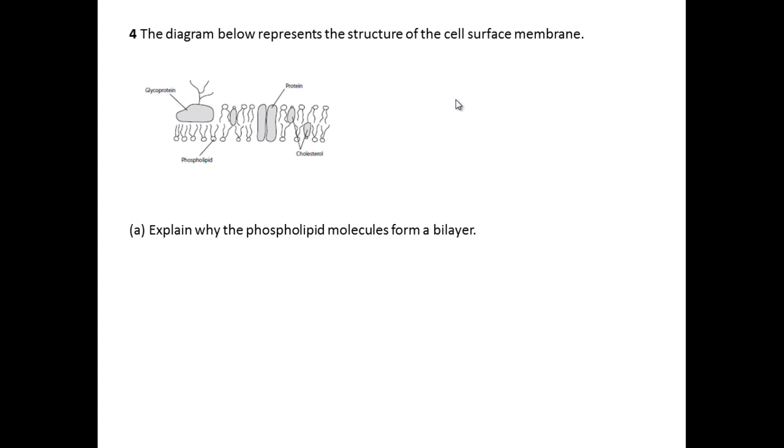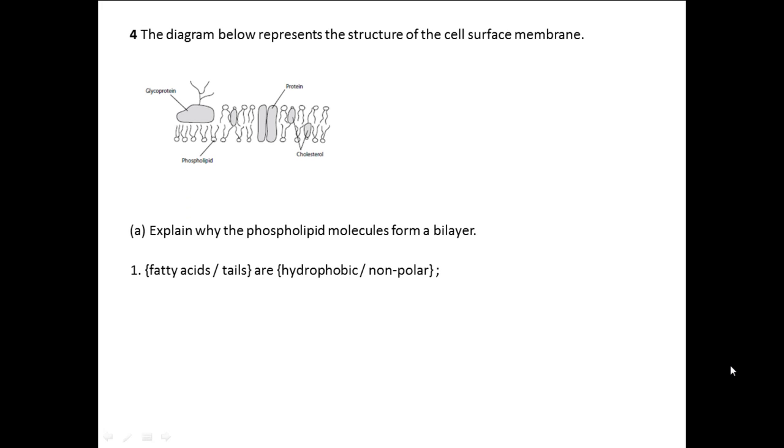The phospholipids are made of two parts - they have a head part and a tail part. The first mark for this question will be the fact that the fatty acids or the tails are hydrophobic, which means they do not like water. The fact that they are hydrophobic means they will orientate themselves away from the water or the polar environment in this case.